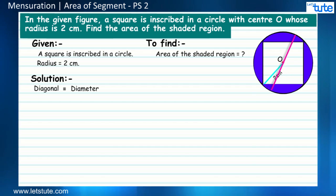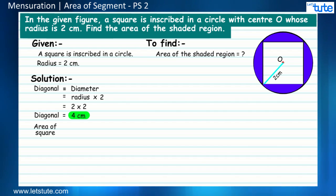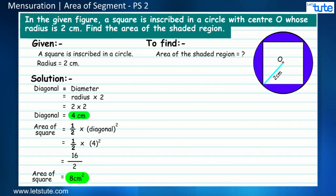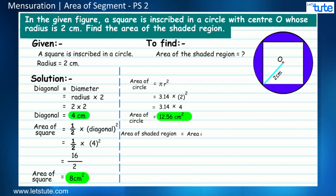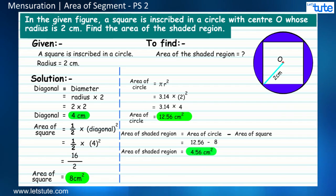The diameter of the circle will be the same as the diagonal of the square, which is twice the radius — that is 4 centimeters. The area of the square can be written as half the square of the diagonal: (1/2) × 4² = 8 square centimeters. The area of the circle is πr² = π × 2² = 12.56 square centimeters. Therefore, the area of the shaded region = 12.56 − 8 = 4.56 square centimeters.